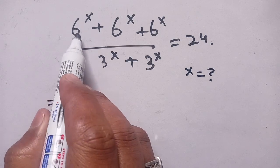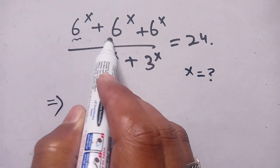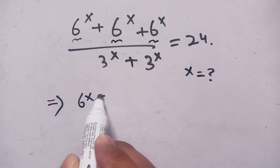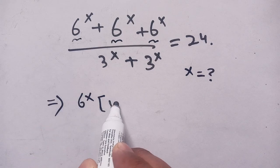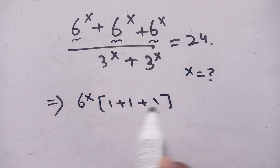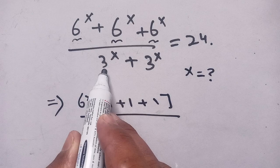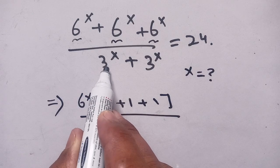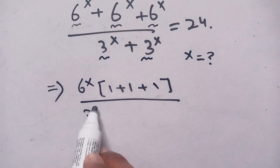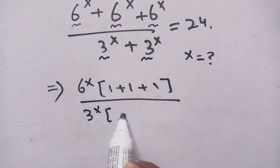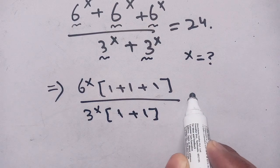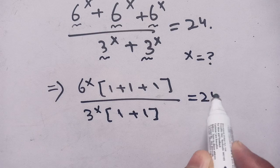First of all, we can take out 6^x from each term in the numerator, and we get 6^x times (1 + 1 + 1). In the denominator we can take out 3^x from both terms, and we get 3^x times (1 + 1), which is equal to 24.